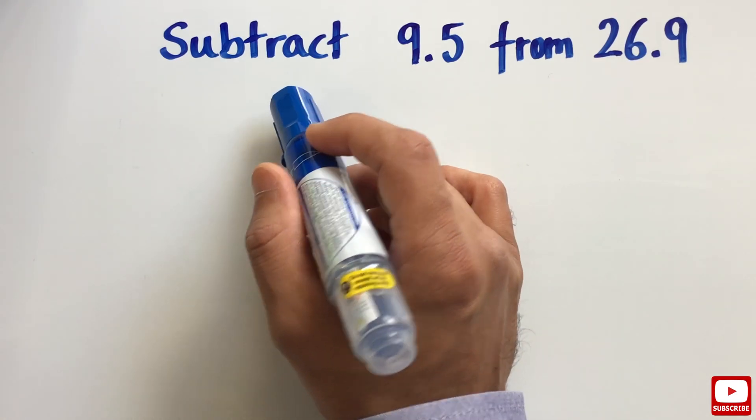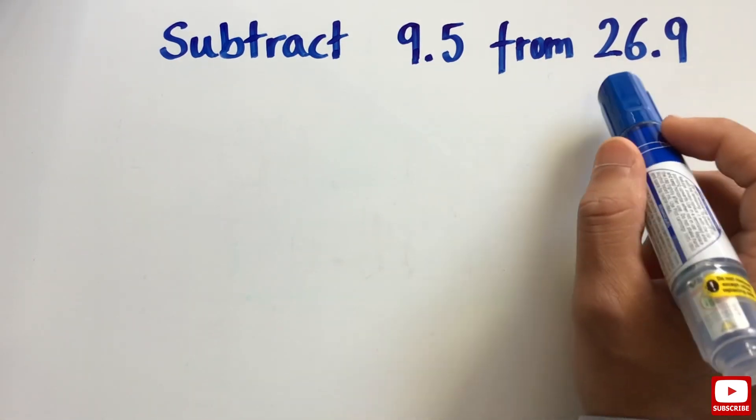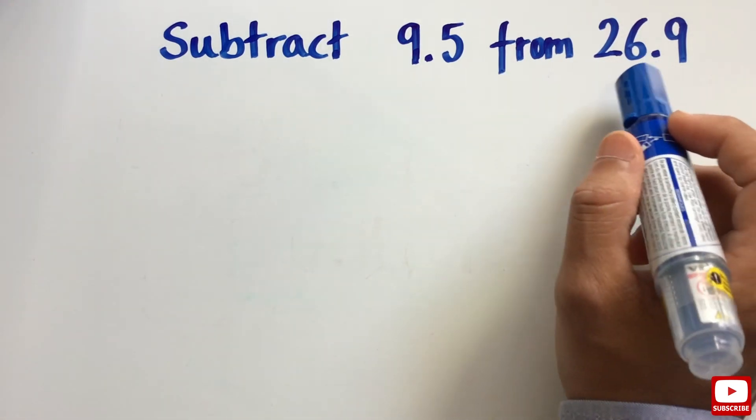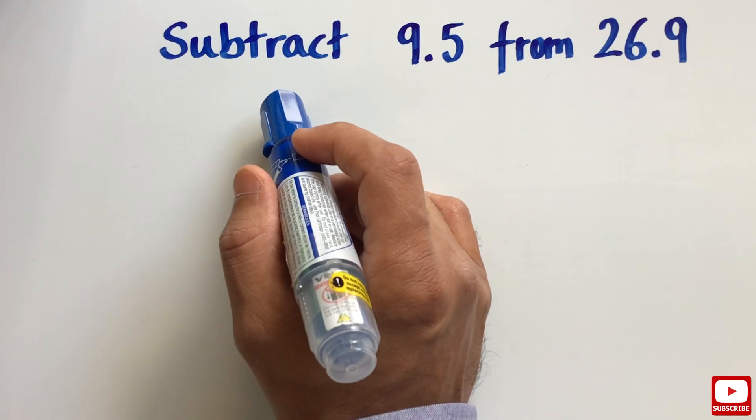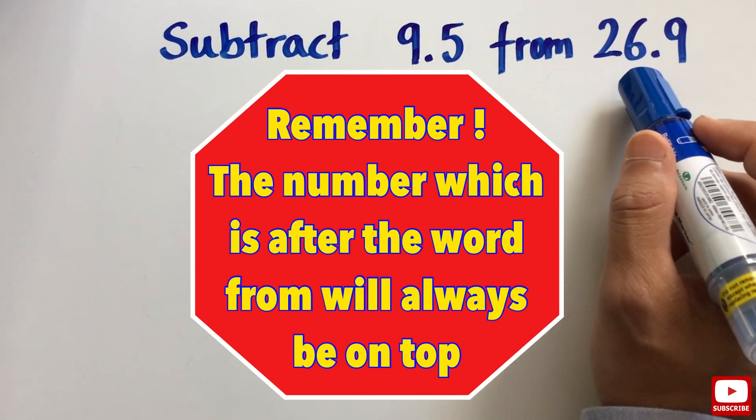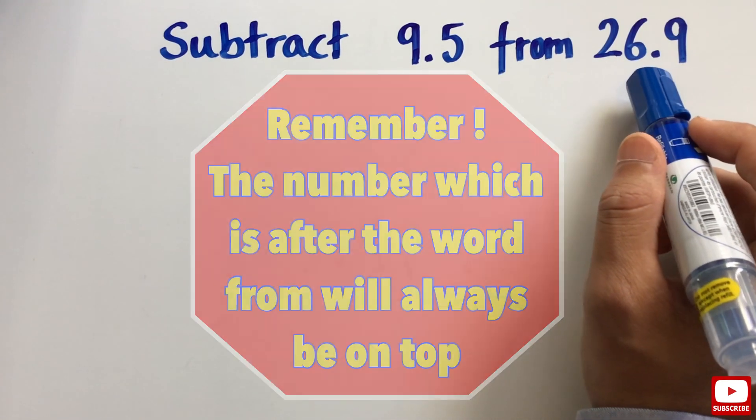In this example, we need to subtract 9.5 from 26.9. Now, unlike addition, it is important that we keep the right number on top while subtracting. And an easy way to remember this is the number that comes after the word from will always be on top.